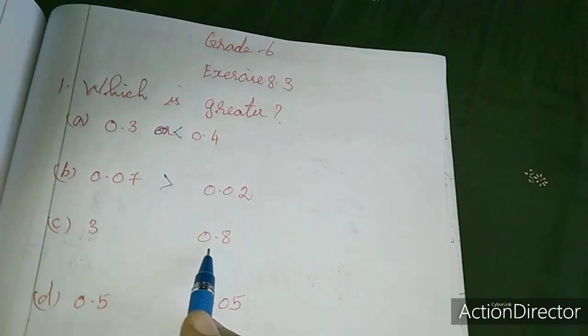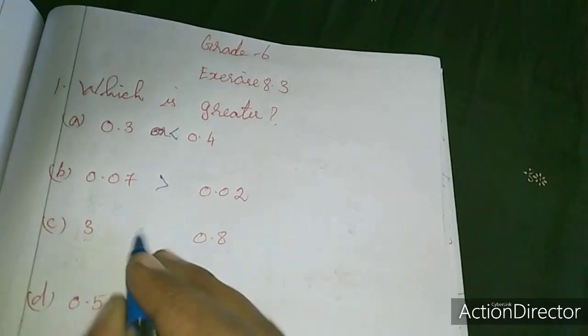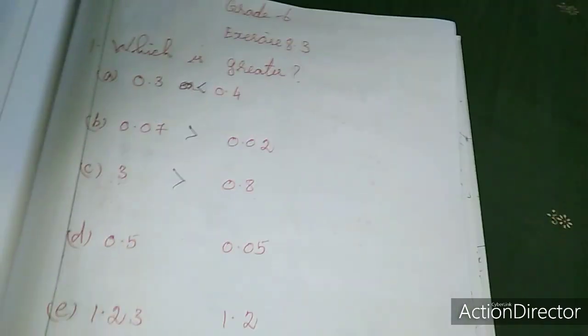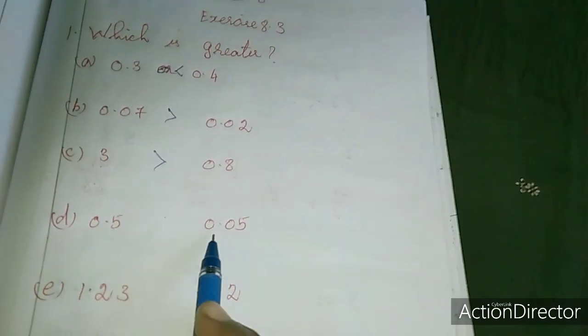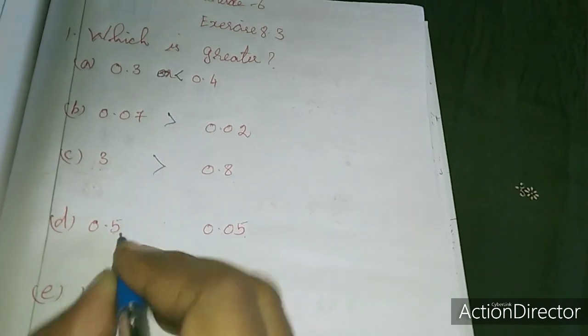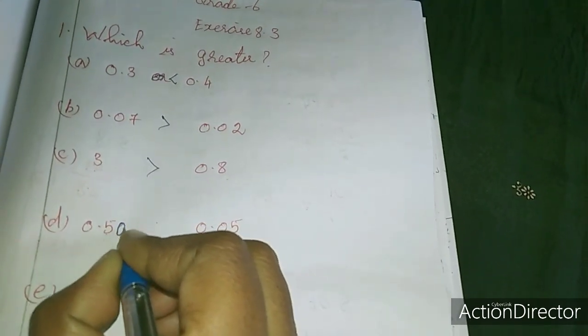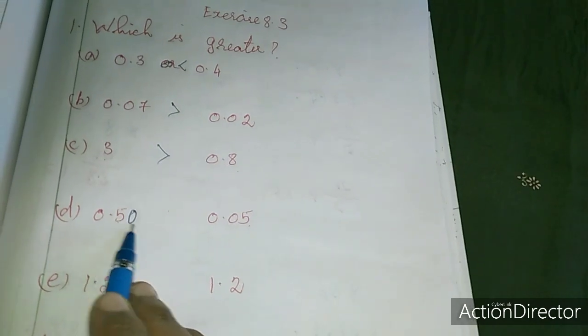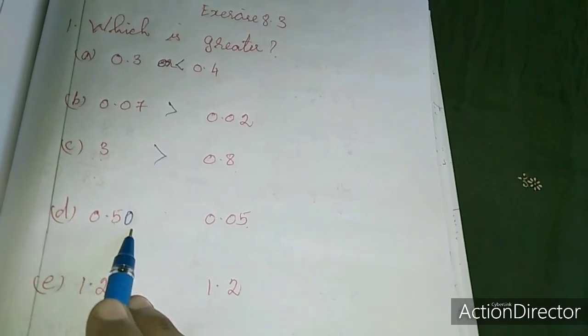Here is 0.5 and 0.05. This is two digits and here is one digit. So equalize because this is zero. We are going to join the last zero. This is equalized: 0.50 or 0.05. 0.50 is the greatest.